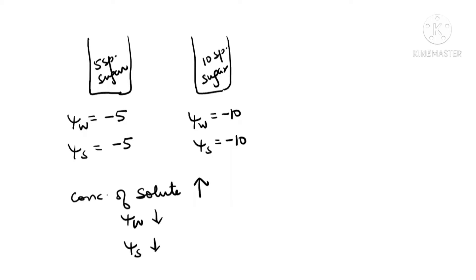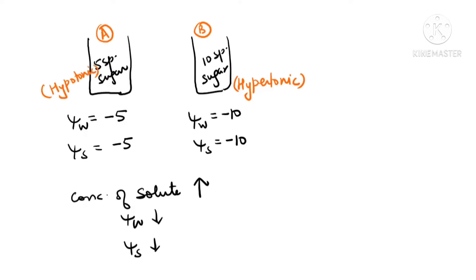Now see these two solutions — A solution and B solution. Where you find sugar is high, through the diagram you can see beaker B is having high concentration of sugar, so B beaker is hypertonic and A beaker is hypotonic. Depending upon the amount of sugar, where it is high we say hypertonic; if sugar is low we say hypotonic. These concepts should be clear first.